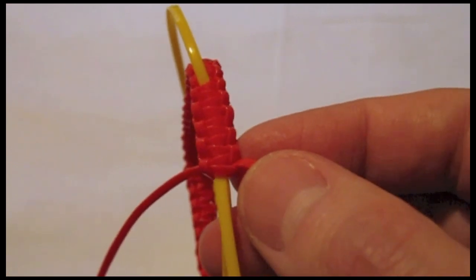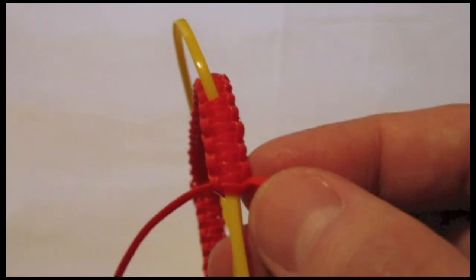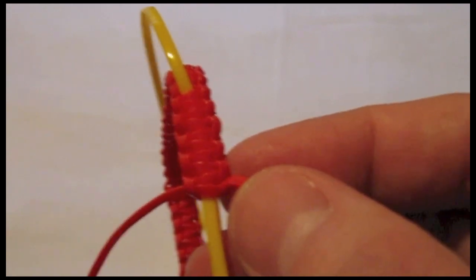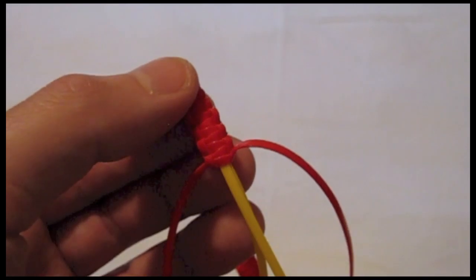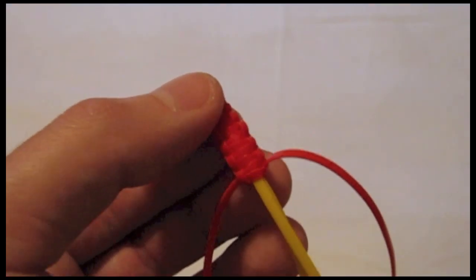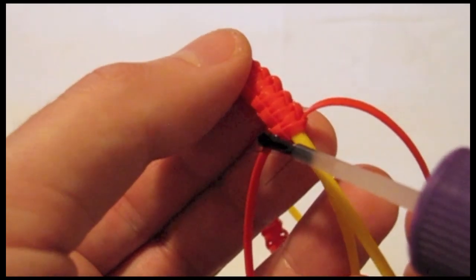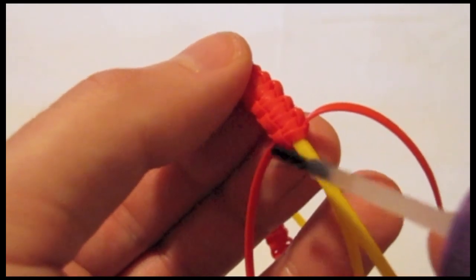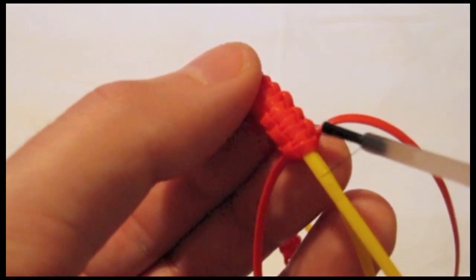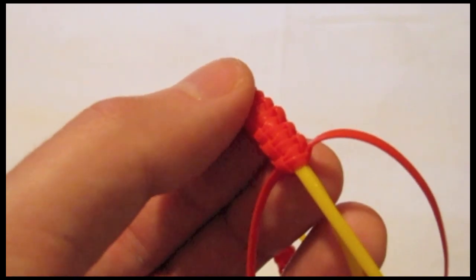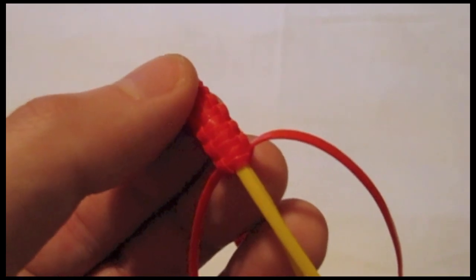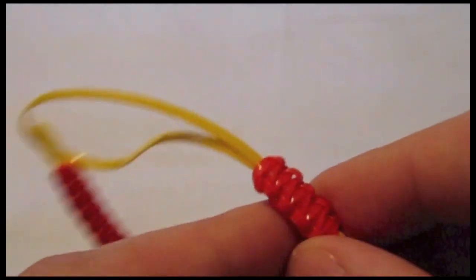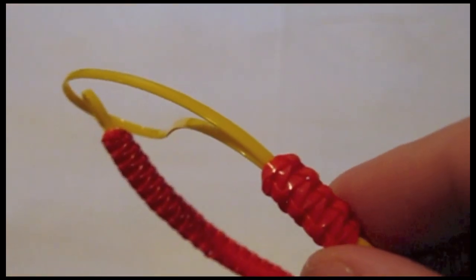Superglue is dangerous if you use it incorrectly, so if you're under 18, you need to have an adult with you to do this part. And let that dry for at least 30 minutes. My glue has dried and I've cut off the long strands. Now I'm ready for the next step.